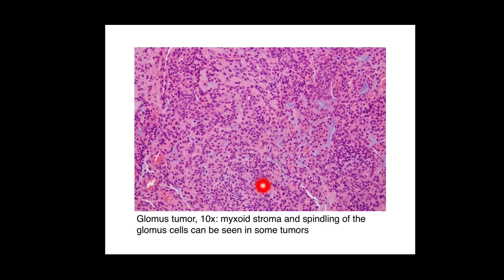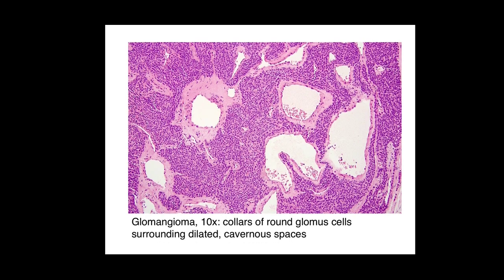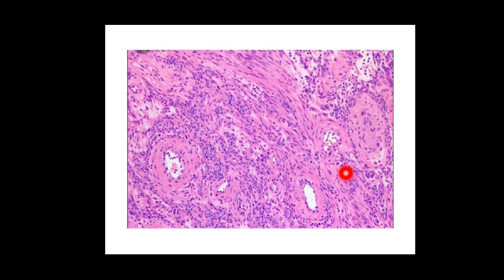This is the microscopy of a glomus tumour — you can see the predominance of the glomus cells. This is the glomangioma, with larger vascular spaces. And this is the glomangiomyoma, which has both large vascular spaces as well as an increase in the amount of smooth muscle cells.